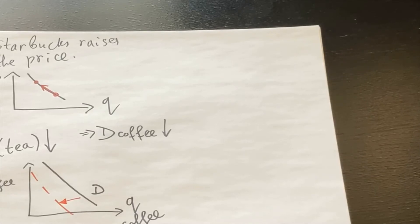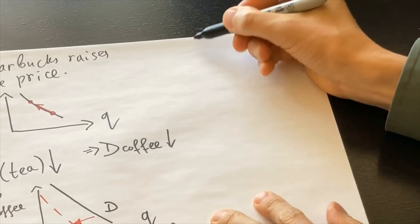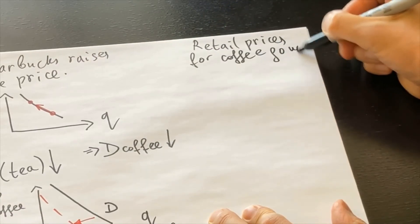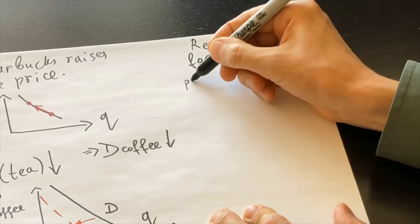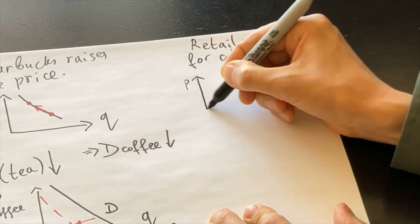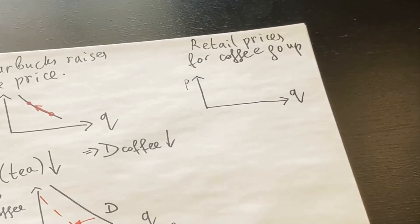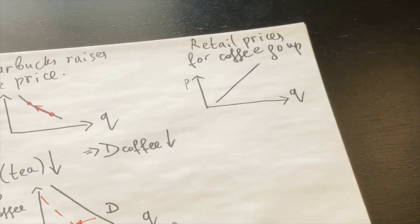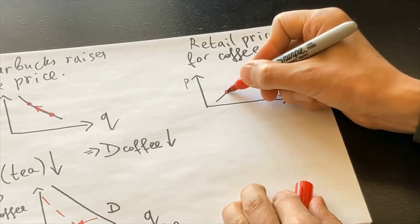Demand will shift to the left. Let's discuss supply again. If the price changes, you move along the curve. For example, retail prices for coffee go up — suppliers will be happy to see that. They will be more willing to sell more expensive coffee. So on the supply curve, suppliers will move along the curve upward.